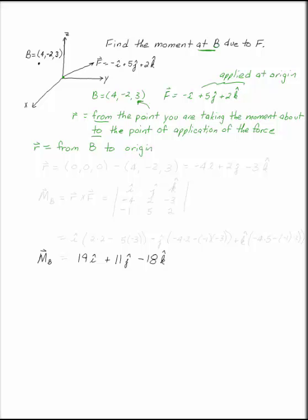Now remember, in finding a position vector, what you want to do is 'to minus from.' So R, the vector, is going to be (0, 0, 0) minus your point B, which was (4, -2, 3). As soon as you do that, you know that the vector R is going to be -4i + 2j - 3k.